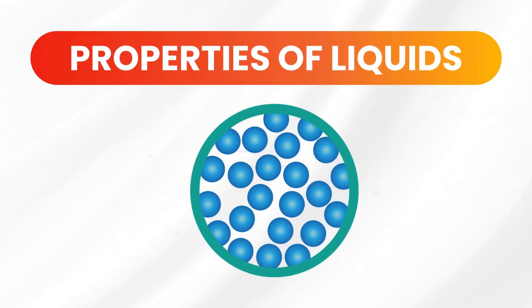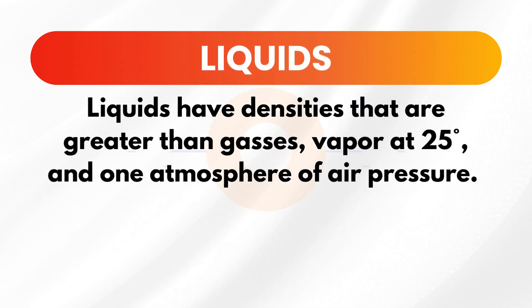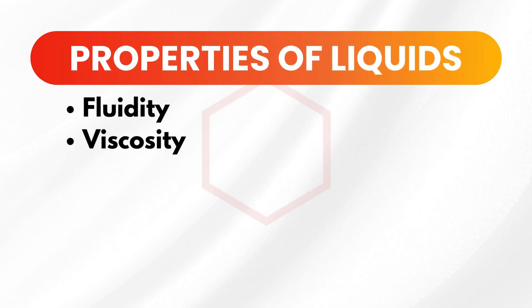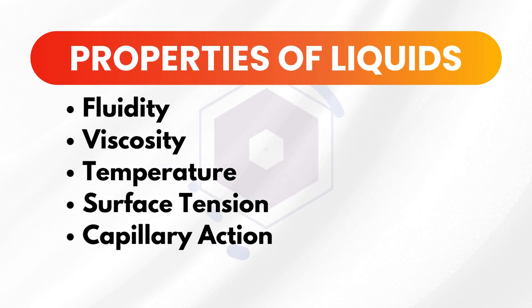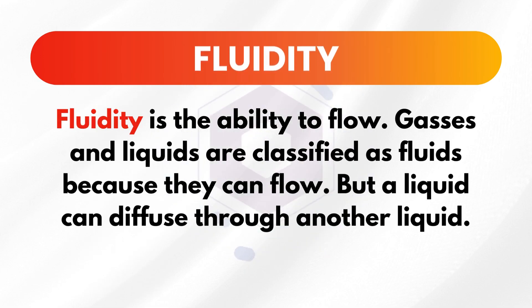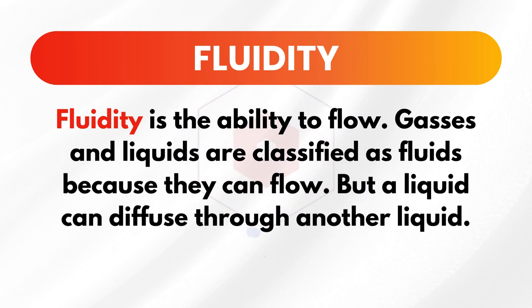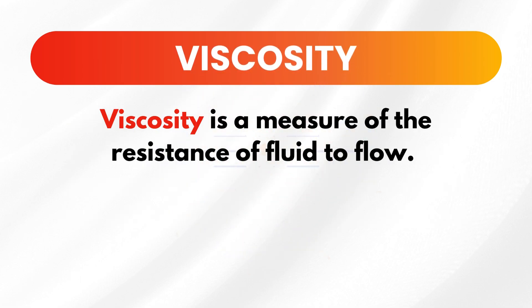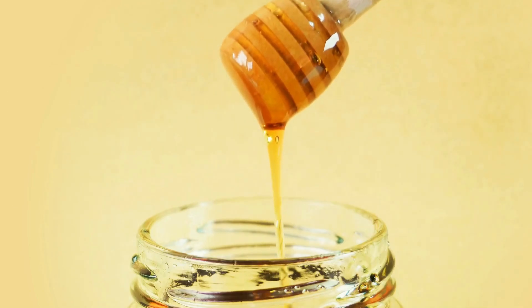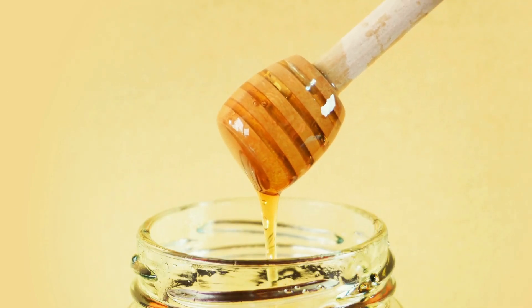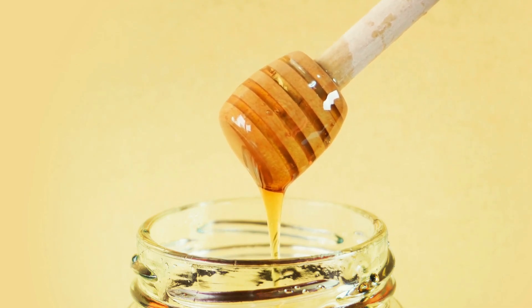Now let's move on to liquids. Liquids have properties that are quite different from solids. The properties of liquids are fluidity, viscosity, temperature, surface tension, capillary action, and density. For fluidity, liquids can flow and take the shape of their container. For example, pour water into a glass and it takes the shape of the glass. Liquid food coloring can also diffuse through water, demonstrating this fluidity. Next is viscosity — the resistance of a liquid to flow. Honey is more viscous than water because it flows more slowly due to stronger intermolecular forces.